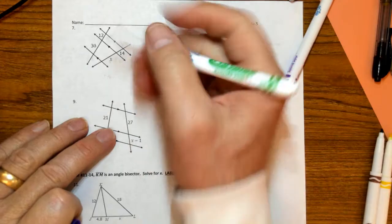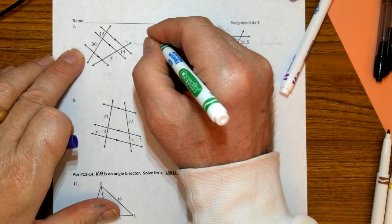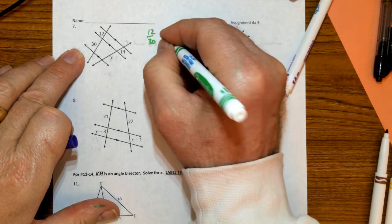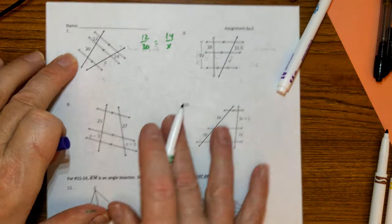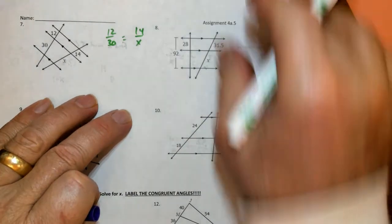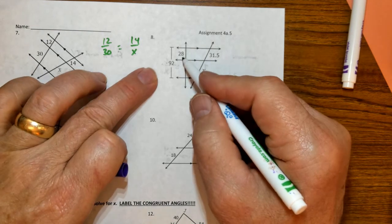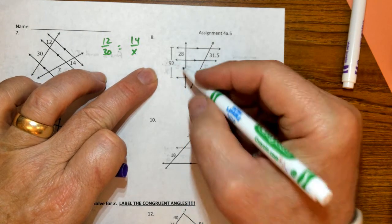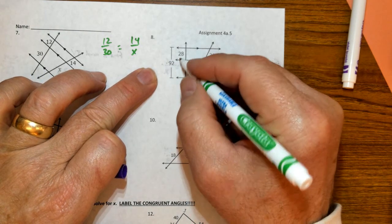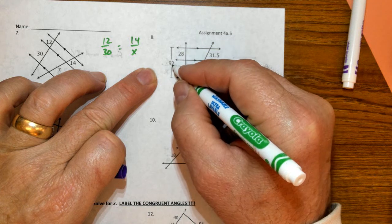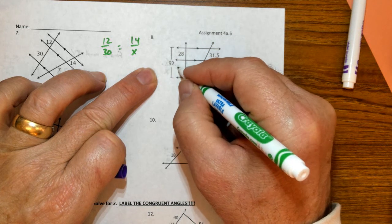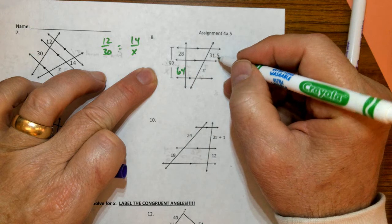This one, we've got 12 is to 30 as 14 is to X. Do your cross product, solve for X. Same thing here. Number 8, this has got part plus part equals whole. So you've got to subtract 28 from 92 and that I think is 64. So now I've got this.